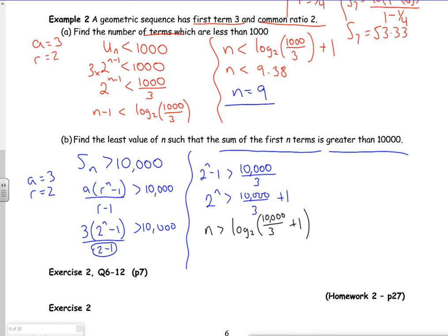So if n is greater than 11.7, then I'm saying that n must be 12. So at n is 11, the sum is less than 10,000. At n is 12, it's the first time it's over 10,000. And I think that's the second lesson done.